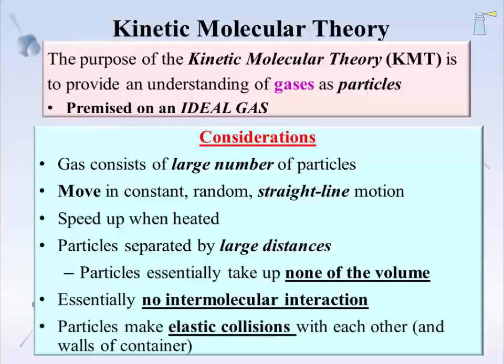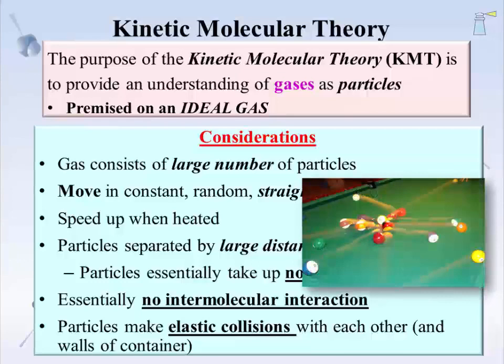Any collision between particles is considered an elastic collision. Elastic, in this context, means the total energy of the collision is conserved. We often treat the energy of the cue ball in pool as conserved — the energy can be transferred to the other balls, but the total energy remains constant. With this understanding of the KMT, we can proceed into gas law under two conditions.